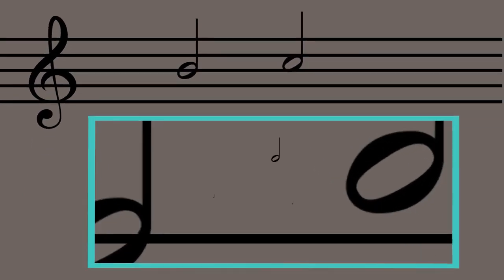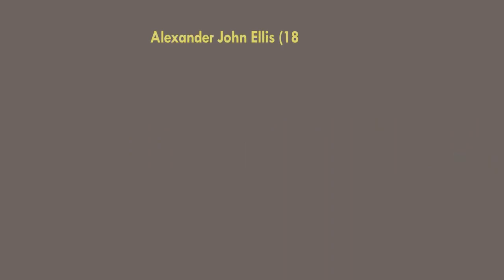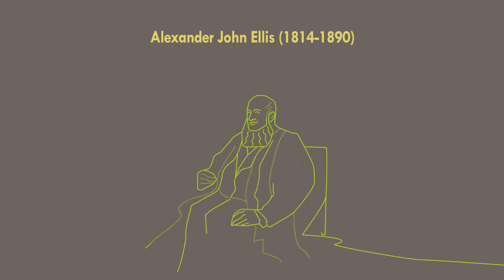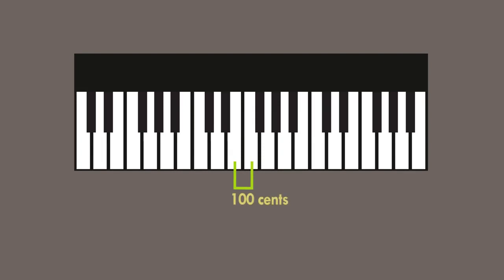To be more precise in measuring distances between pitches, especially when microtones are involved, we use cents. Cents were defined by English mathematician and philologist Alexander John Ellis in 1884. He is also regarded as the founder of the field of ethnomusicology, and he invented cents originally for the purpose of expressing non-Western scales. The cent is a logarithmic unit of measure used for musical intervals. Each semitone in our twelve-tone equal temperament has one hundred cents, so an octave, which has twelve semitones, would have twelve hundred cents.